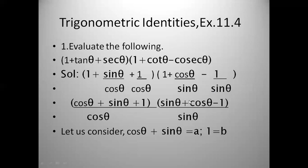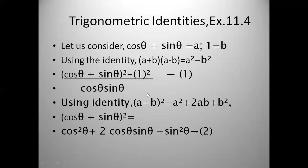Now observe: the numerator of the first bracket is (cos θ + sin θ + 1) and of the second is (sin θ + cos θ − 1). Let us assume cos θ + sin θ as 'a' and 1 as 'b'. Then the first numerator is (a + b) and the second is (a − b). We can apply the identity (a + b)(a − b) = a² − b².